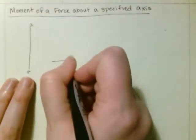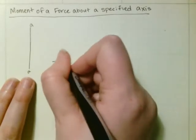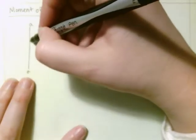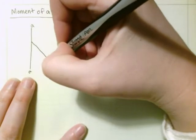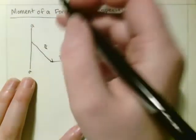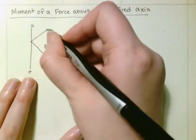we had a force out here called f, and we had a position vector r, then the resulted moment would be something like this.